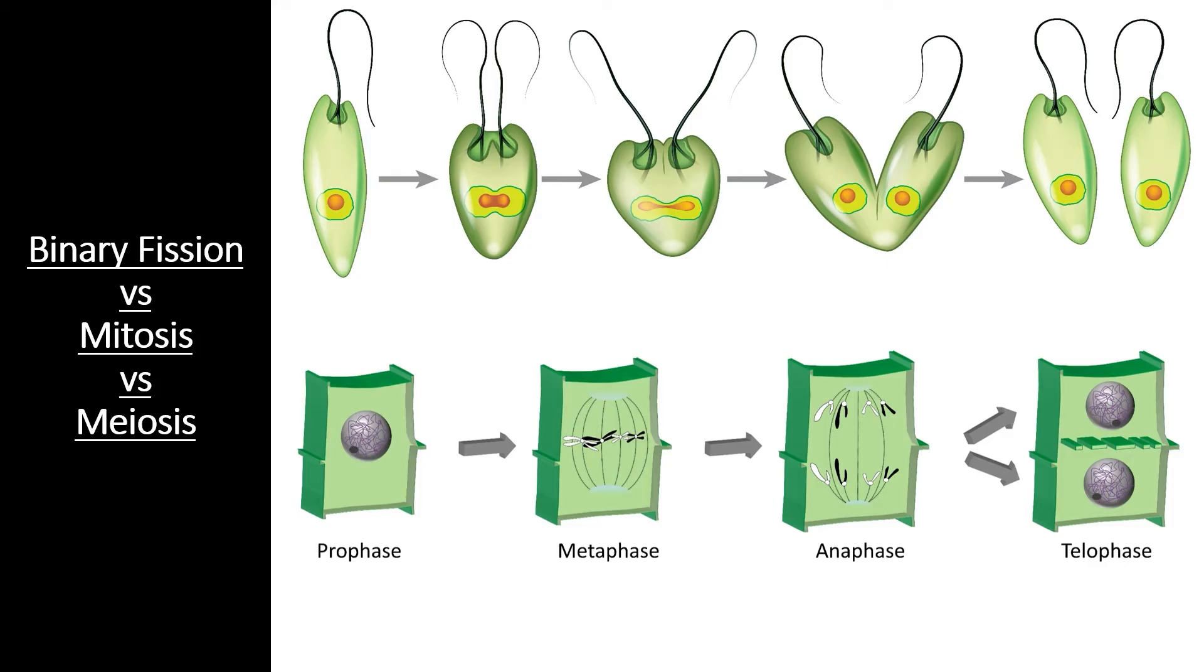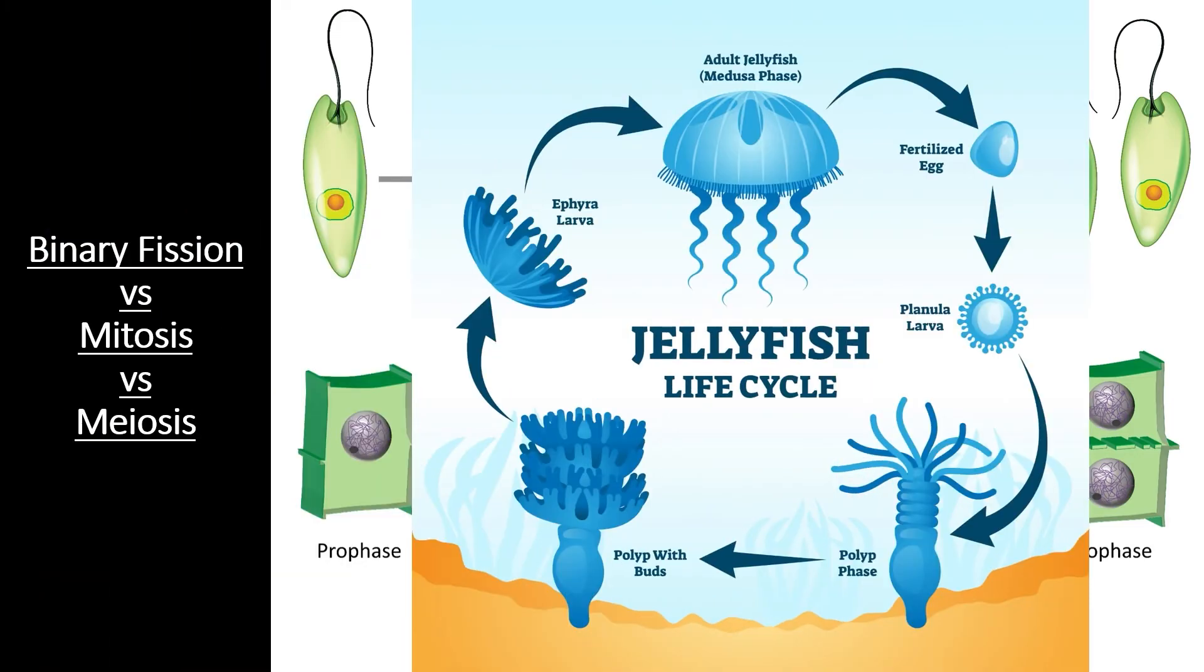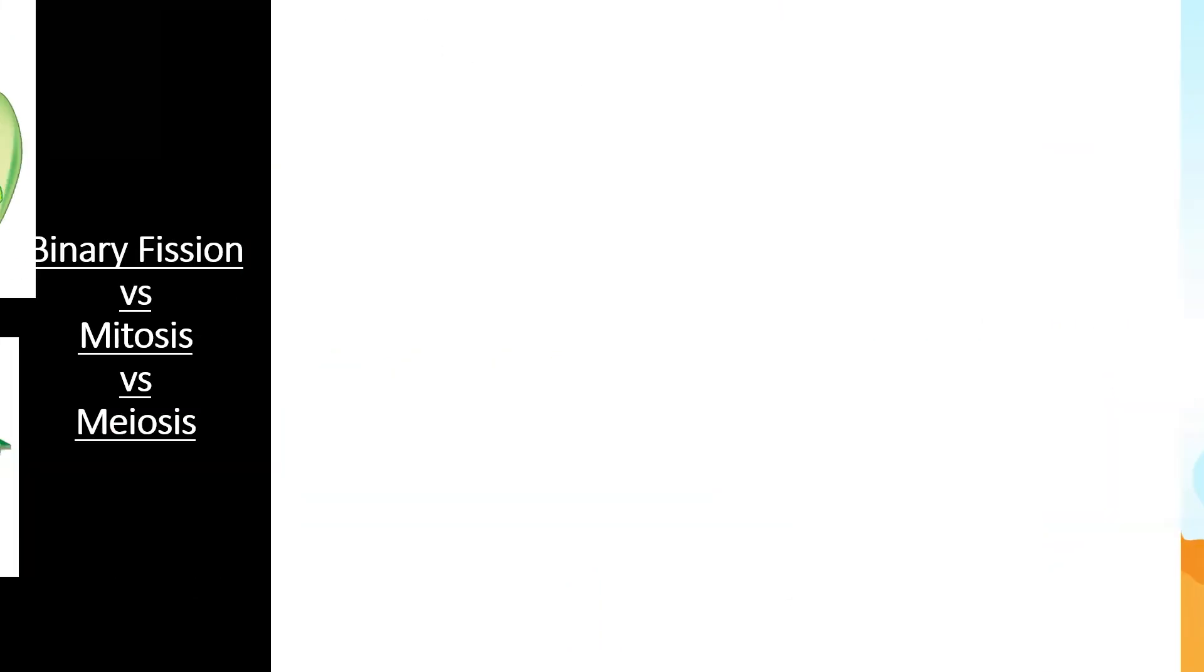Some multicellular organisms that can reproduce asexually, like jellyfish, use the process of mitosis to do so. We'll take a closer look at the stages of mitosis in a bit.